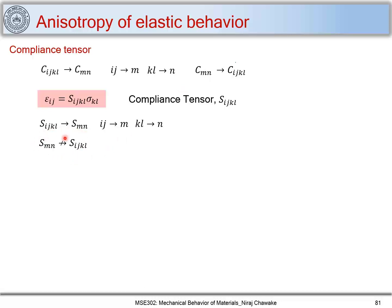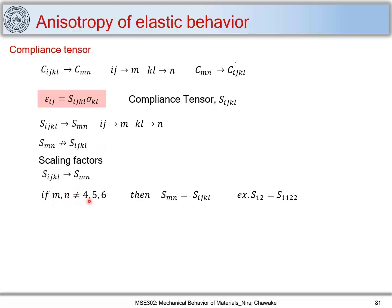You need to apply scaling factors when converting S_MN to Sᵢⱼₖₗ. If M and N are not equal to 4, 5, or 6, then S_MN = Sᵢⱼₖₗ directly. For example, S₁₂ where M=1 and N=2 are not in {4,5,6}, so S₁₂ = S₁₁₂₂. This is straightforward — when M and N are not 4, 5, or 6, you can convert back from Voigt notation without any scaling factors.